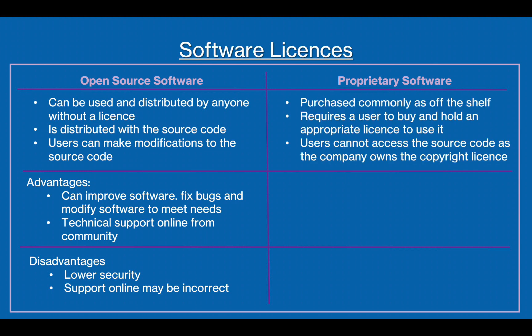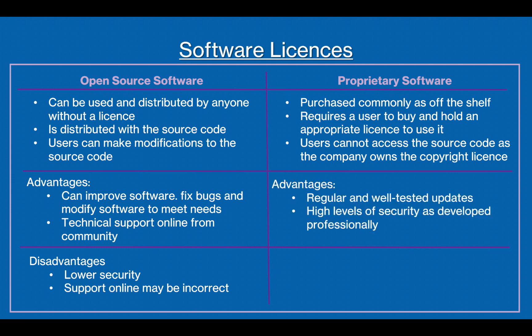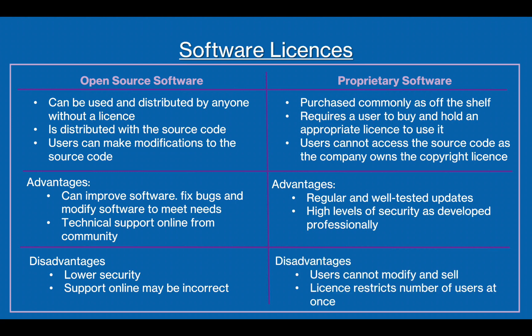On the other hand, proprietary software requires a licence for it to be used. Users cannot access the source code as the company owns the copyright licence. This means that users cannot modify and improve the software themselves. However, the software is likely to have regular, well-tested updates. It's important to know what these two types of software are and their differences, advantages, and disadvantages, because you might be asked to suggest a suitable software licensing and to give reasons.